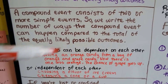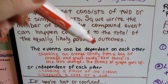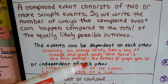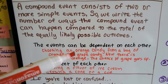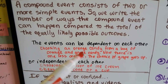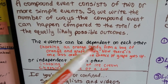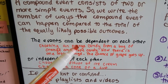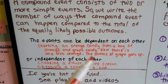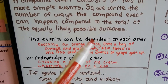Compound events can be dependent or independent of each other. They're dependent if the outcome depends on what happened before. For example, if we have a bag of orange and grape candy with five of each, and we pick an orange candy out and eat it, now there are four orange candies and five grape candies. Our next pick is dependent on what happened before — now there's less orange, so there's a greater chance of picking a grape one.